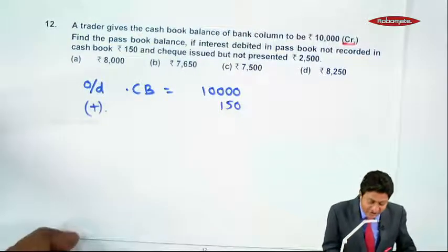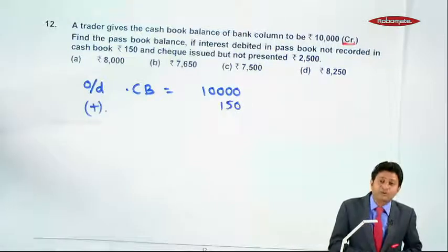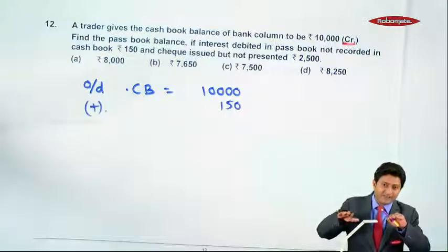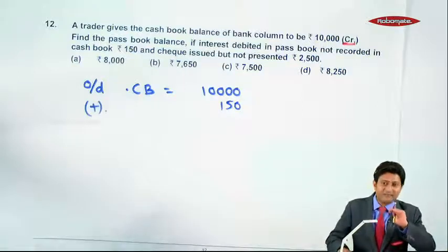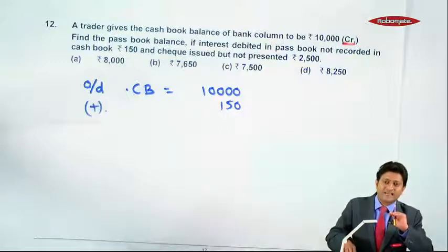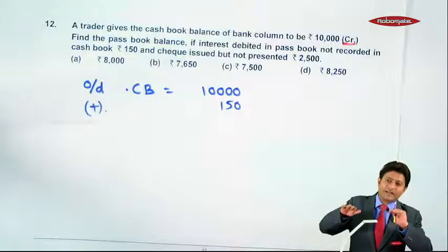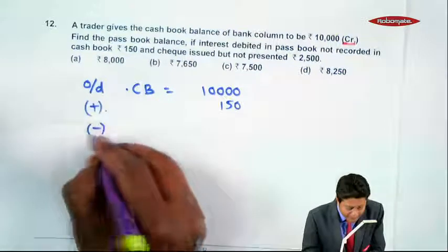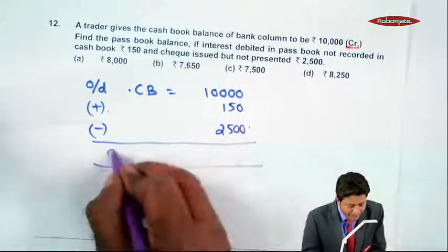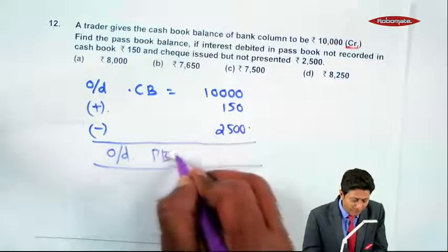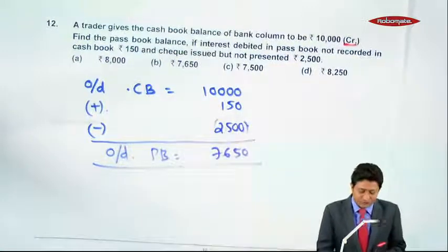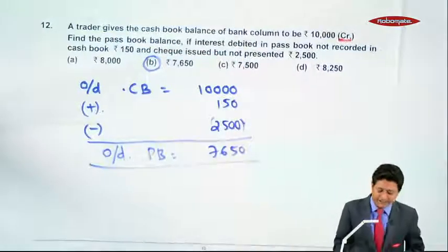Next adjustment: Cheque issued but not presented ₹2,500. We have issued the cheque, reduced from cash book but not from pass book. Now we have to adjust, but since we have overdraft, we will do less ₹2,500. So my balance as per passbook, overdraft as per passbook, will become ₹7,650. The answer is option B.